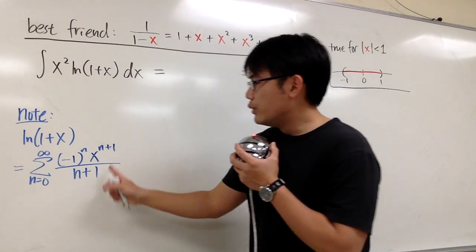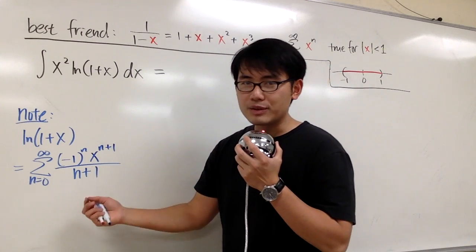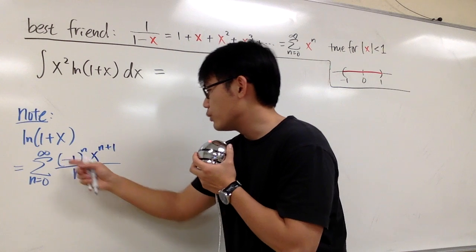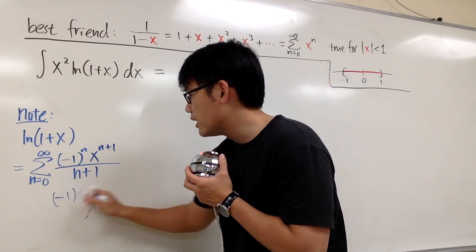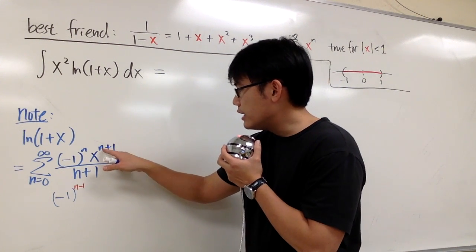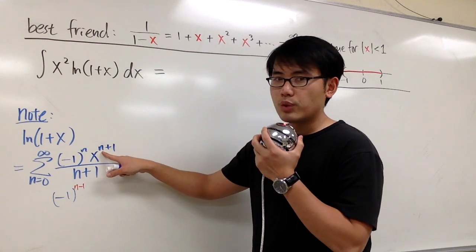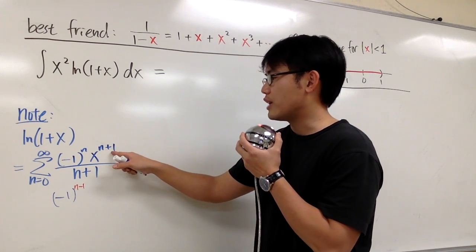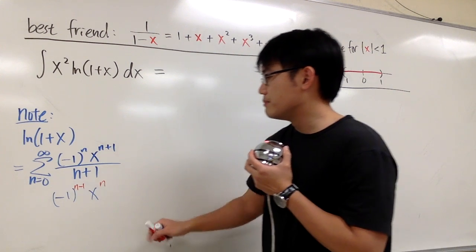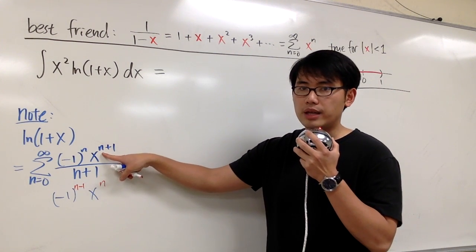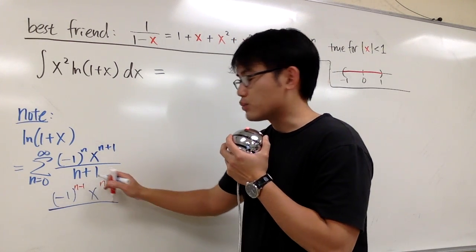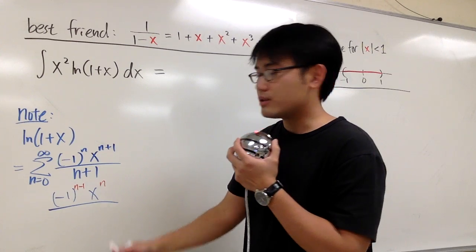This is what we can do. Look at this formula here and plug in n minus 1 into all the n. So we are going to get negative 1 raised to the n minus 1 power, and then for the x to the n plus 1 power, if you plug in n minus 1 into here, it's just x to the n power. On the bottom, we have n plus 1, but then I subtract 1 from the n, so we have n on the bottom.